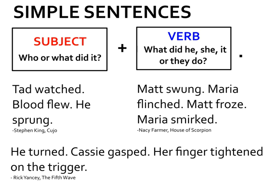Let's start to look at some of these short sentences — we're going to call them simple sentences. A simple sentence has two things: one subject plus one verb. That is it. Here's one from Stephen King's Cujo: 'Tad watched, blood flew, he sprung.' These simple sentences really can paint a picture for us. They're short and they have a strong, powerful effect.